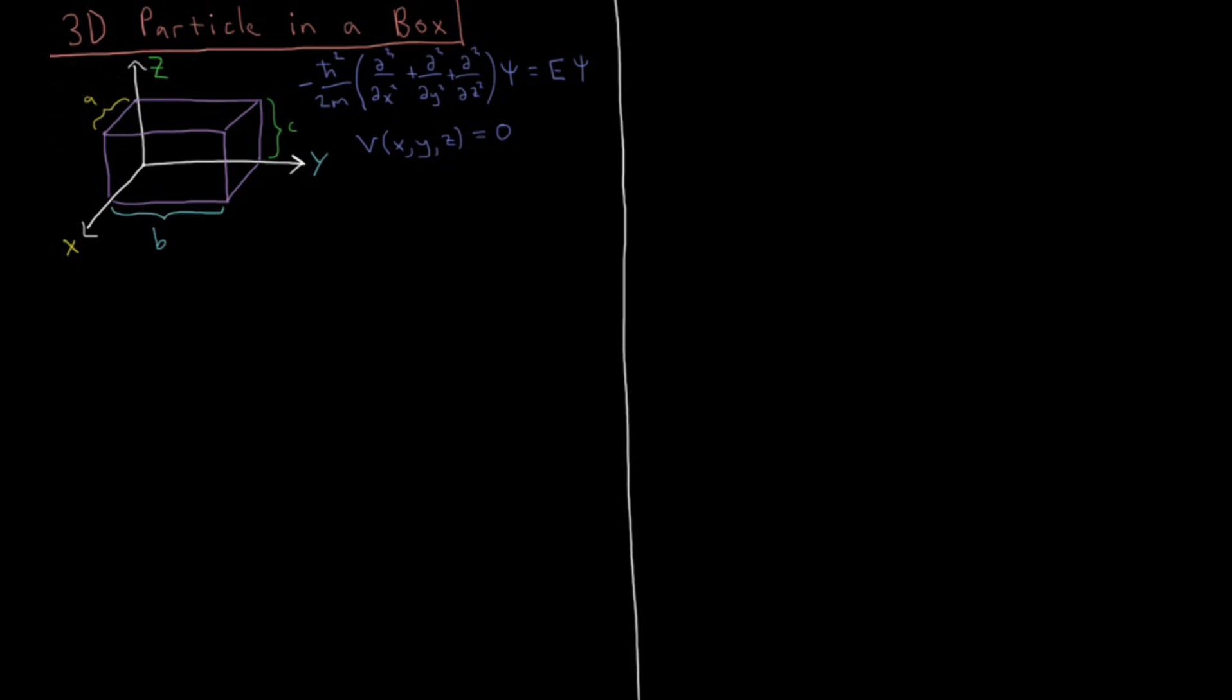So a shorthand version of writing this would be to write minus h-bar squared over 2m del squared psi equals e psi. Where our shorthand for this del squared operator, which is called the Laplacian operator, is the second partial with respect to every spatial dimension. Second partial with respect to x, second partial with respect to y, second partial with respect to z. So this operator is called the Laplacian operator, and we call it del squared.